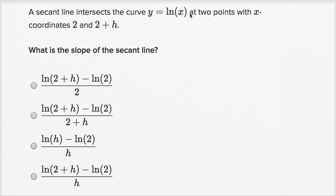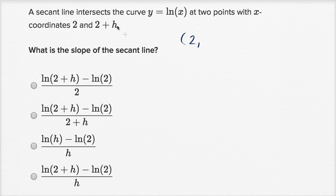They're giving us two points on this line. It might not be immediately obvious, but they're giving us the points when x is equal to two. When x is equal to two, what is y? Well, y is equal to the natural log of x. So in this case, it is going to be the natural log of two.